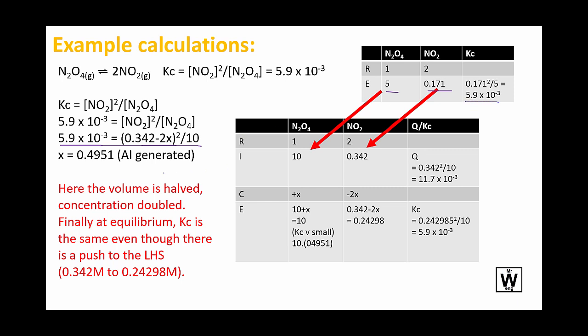What we're going to do is what we just said, halve the volume, double the concentration. So I've changed that to 10 and 0.342. The stoichiometric ratio is the key here. So that is going to decrease by 2 and that's only going to go up by 1. We sub all that in and we get 0.495.